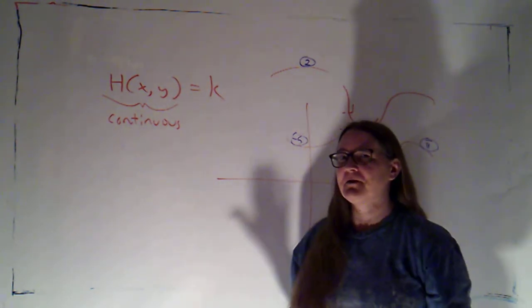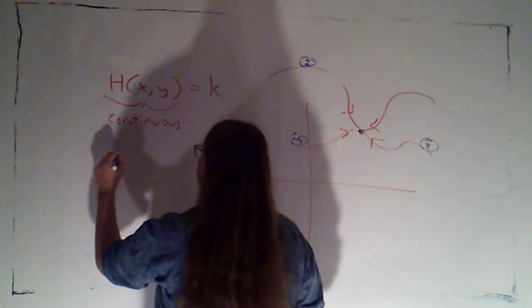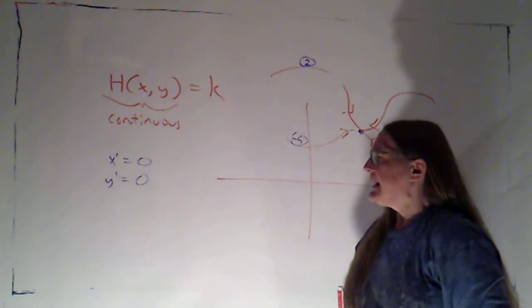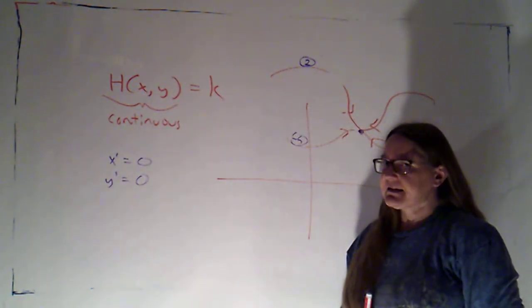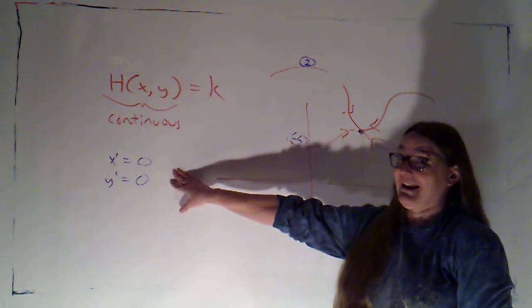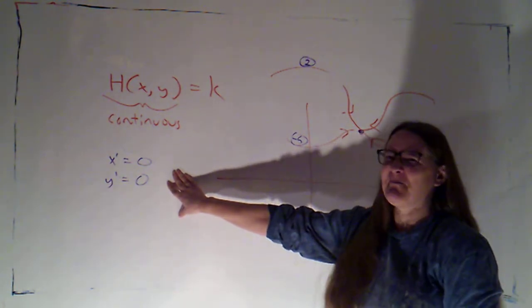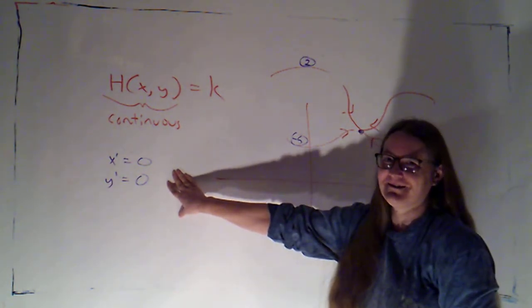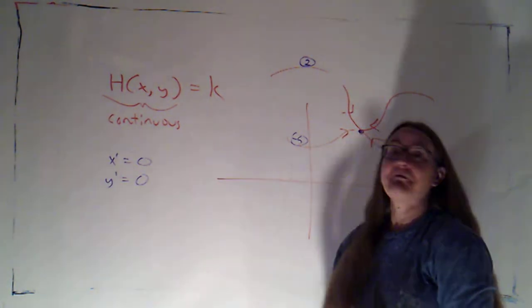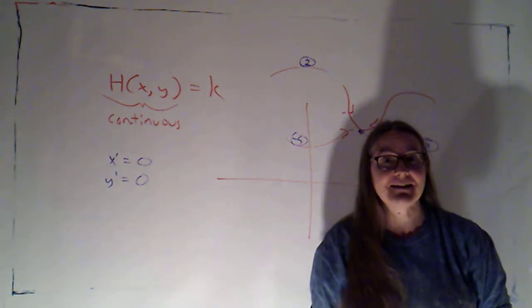And if I'm trying to solve a system, x prime equals zero, y prime equals zero, technically, yes, that is Hamiltonian. But if your approach to solving that is to try to find the Hamiltonian function, you're kind of missing that that basically says every point is an equilibrium solution. So it's incredibly boring. And if every point were an equilibrium solution, I still wouldn't have a sink.